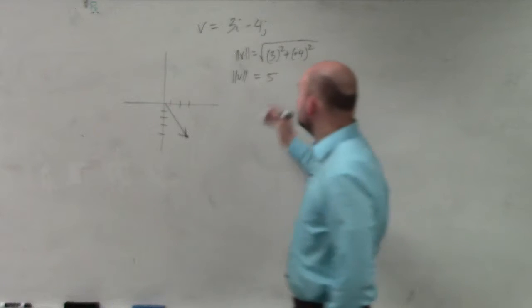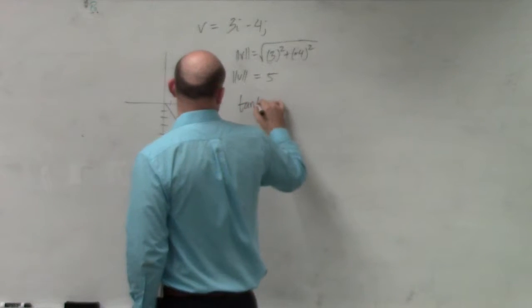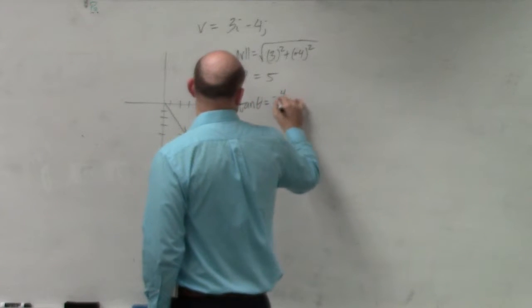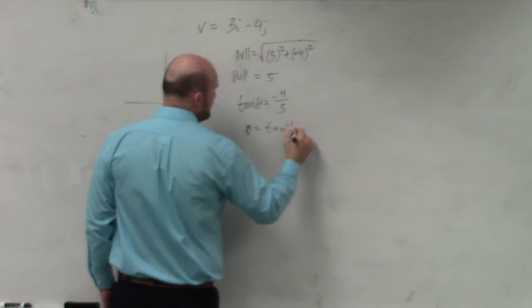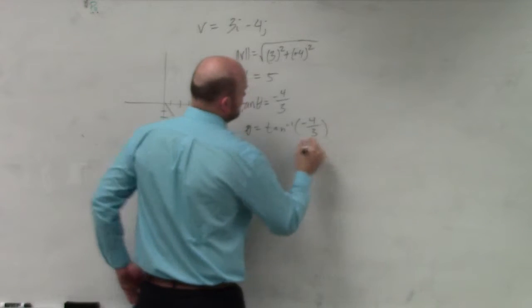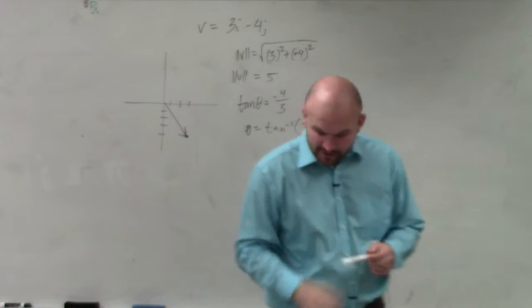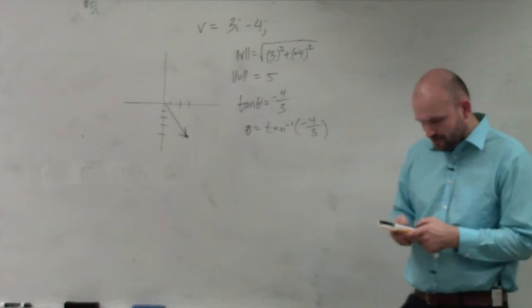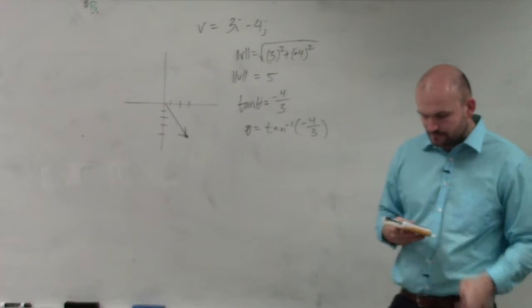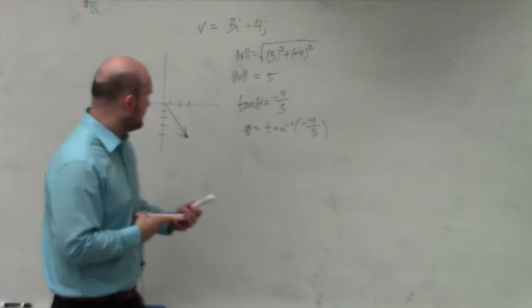And then it says find the direction. So we have the tangent of theta is equal to negative four over three. So therefore, theta equals tangent inverse of negative four over three. I just make sure my calculator is in degree mode, and then I go tangent inverse, negative four divided by three. And I get negative fifty-three point one three.